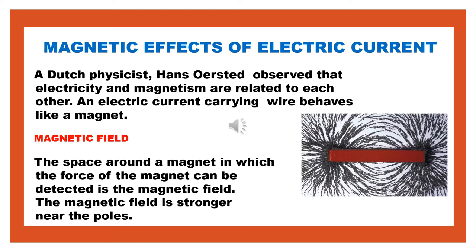Let us see some terms related to this. The first one is magnetic field. The space around a magnet in which the force of the magnet can be detected is called the magnetic field. Around a magnet, it can exert a certain force of attraction as well as repulsion, and this space around the magnet is known as the magnetic field. The magnetic field is stronger near the poles of a bar magnet.